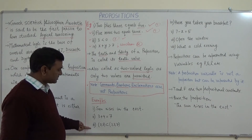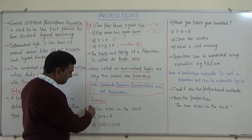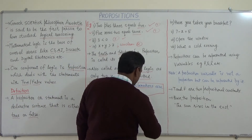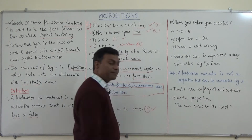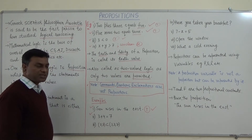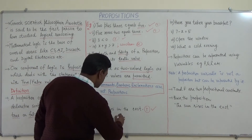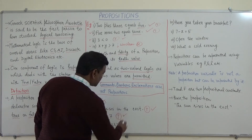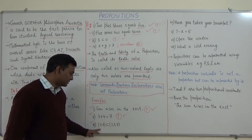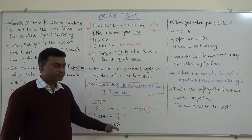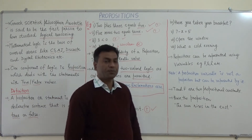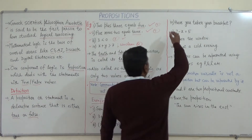Let us see more examples. First: 'Sun rises in the east' — this is true, so it is a proposition. Second: '3 plus 4 equals 7' — this is also true, so it is a proposition. Third: the pair {2, 3} is a proper subset of {2, 3, 7} — again true, so this is also a proposition.